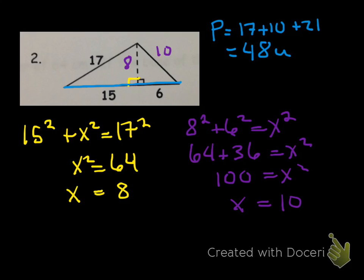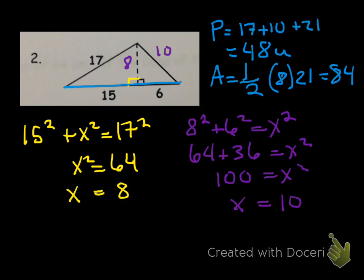And then for the area, it's going to be one half the base times the height. The height is 8 and our base is 21. When you do that, you end up with 84, and again it's units squared.